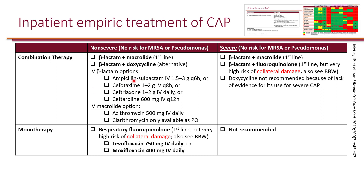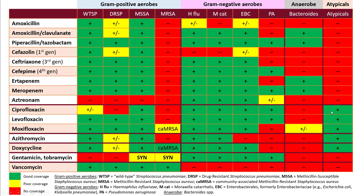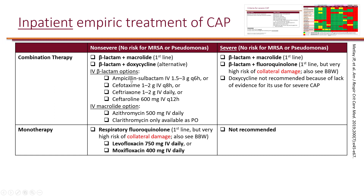We now have IV beta-lactams as a possibility. Because of the mortality benefit in inpatient patients, we use a combination — monotherapy with beta-lactam is no longer an option if someone is hospitalized. We want to combine it with either a macrolide or doxycycline, because beta-lactams don't have activity against atypical agents. By combining the beta-lactam with either azithromycin or doxycycline, you get that extra atypical coverage, and the literature has shown that this combination can actually reduce mortality.